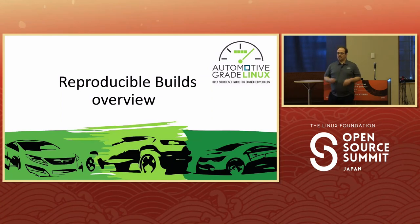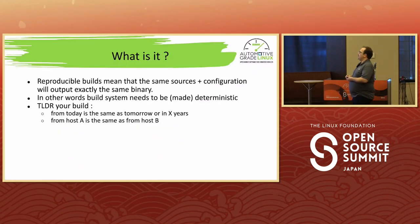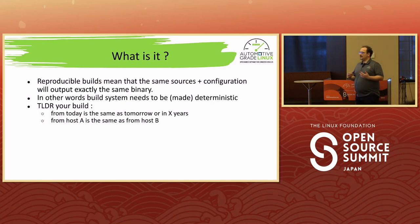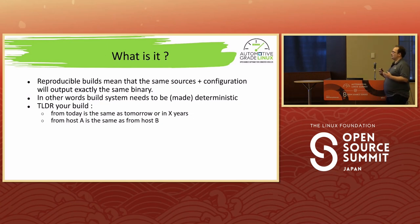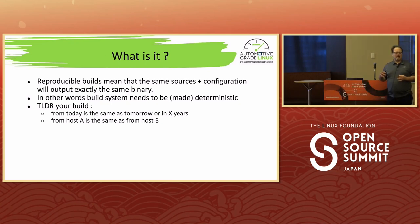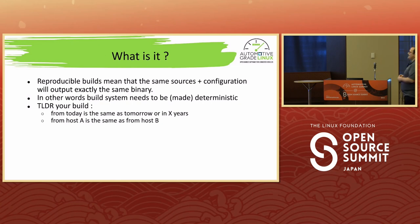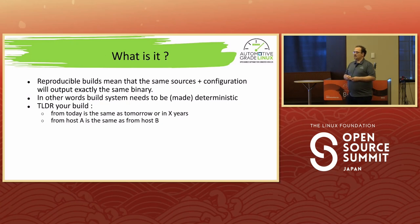So, reproducible builds — what does that mean? Reproducible builds mean that from the same sources and the same configuration, we will get the exact same binary today, tomorrow, and so on — on my PC, on your PC. That's the goal. In other words, the build system needs to be deterministic and produce a deterministic output.